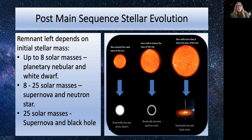The important thing to take from this is that the remnant left depends on the initial stellar mass. A star up to eight solar masses gives a planetary nebula and a white dwarf. A star from eight to 25 solar masses gives a supernova and a neutron star. A star of 25 solar masses or above gives a supernova and a black hole. So supernovae only really come with the most massive stars — our sun won't explode in a supernova, but more massive stars will.